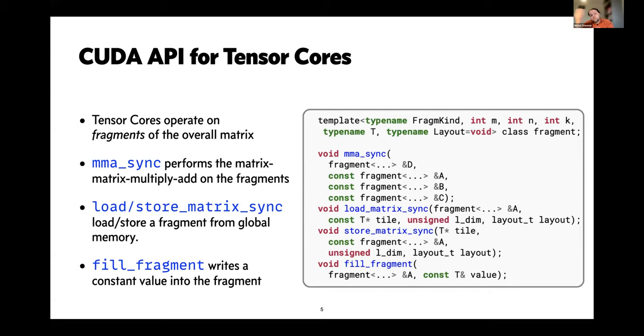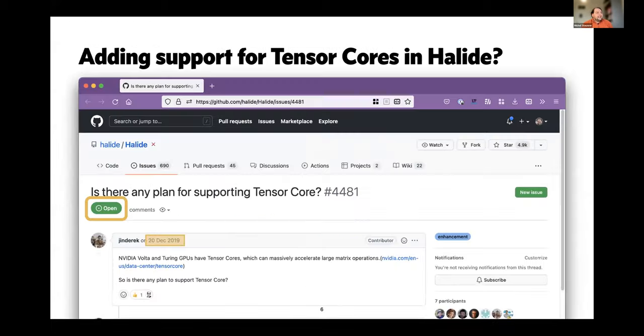The API we see for this that CUDA proposes operates on what NVIDIA calls fragments. These are parts of an overall matrix. They provide an API such as you see here on the right-hand side where we have functions such as MMA (matrix multiply-add), which is synchronous—that's the underscore sync—or instructions for loading and storing these fragments into the global memory of our matrix, filling a fragment, and so on.